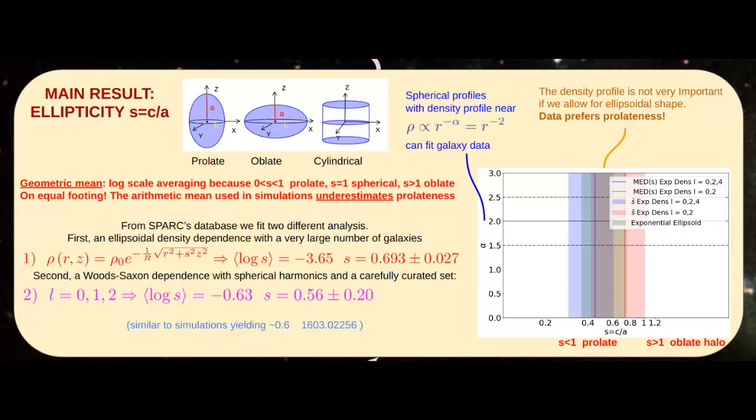But we have found that averaging the ellipticity, as done by Algorry de Torres and other investigators, is biased toward oblateness, which may explain some disagreements in the earlier literature. Since we are studying a ratio, the geometric mean is a better measure of the distribution.